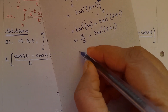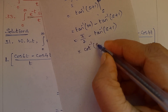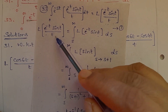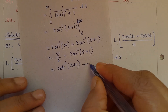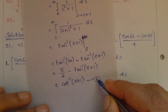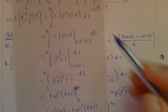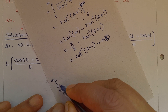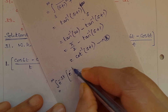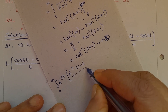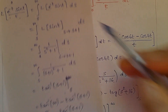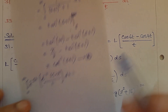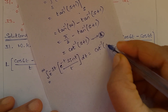Pi/2 minus tan inverse of (s+1) equals cot inverse of (s+1). So the Laplace Transform of e^(-t) sin(t) divided by t is cot inverse of (s+1). Call this equation number 2. Substituting equation number 2 into equation number 1: the integral from 0 to infinity of e^(-t) sin(t) divided by t, dt equals cot inverse of (s+1).